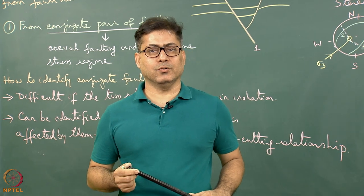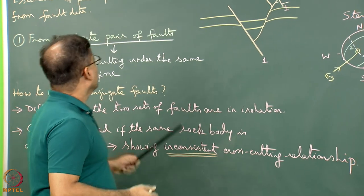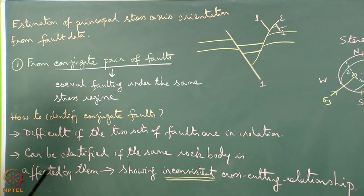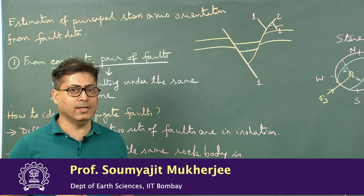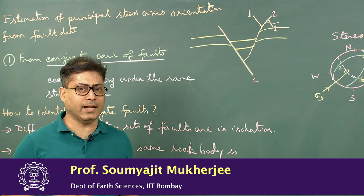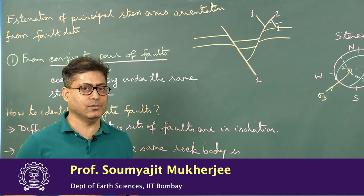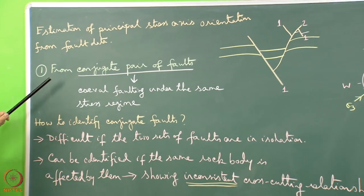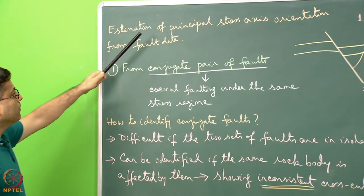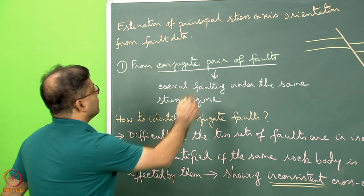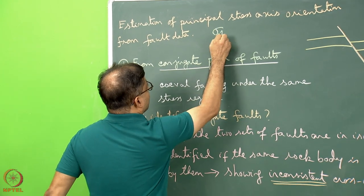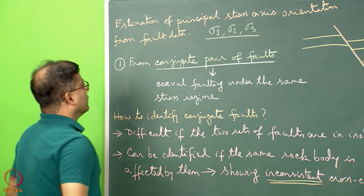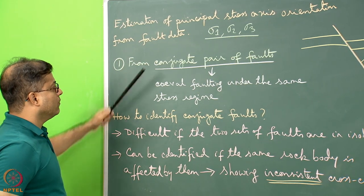I am going to discuss how to find out the principal stress axis orientation from fault data. The Andersonian model of faulting has already been explained and that idea will be important here. We will find out the principal stress axes — sigma 1, sigma 2, and sigma 3 — from the conjugate pair of faults.